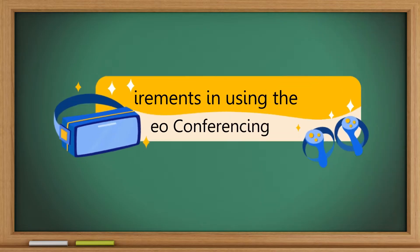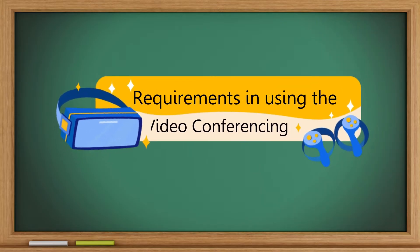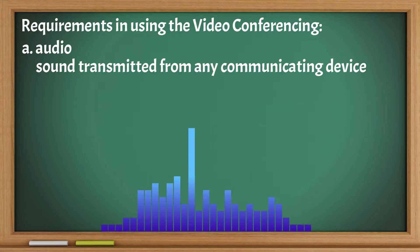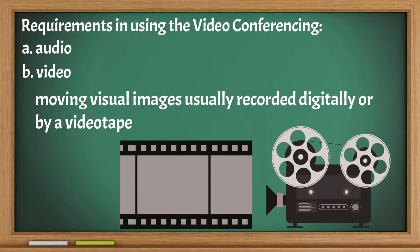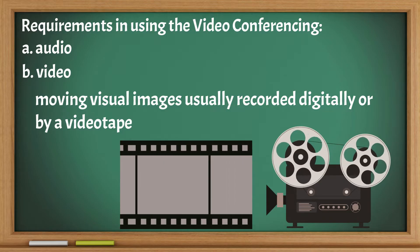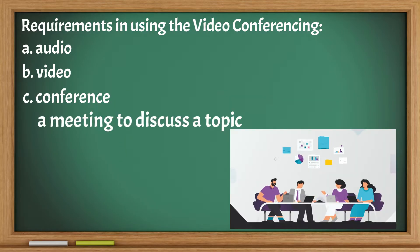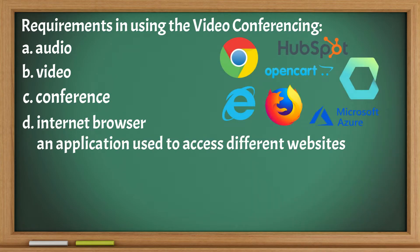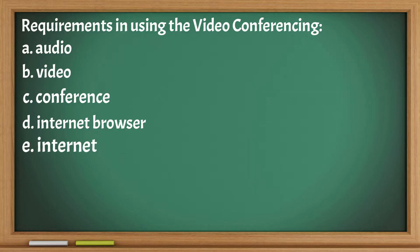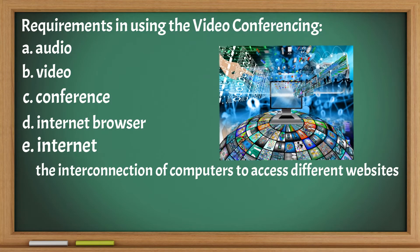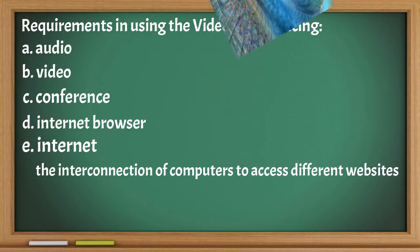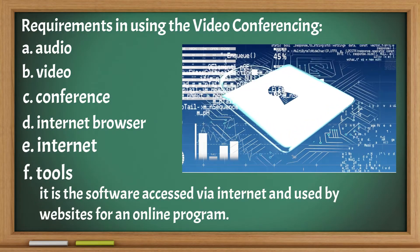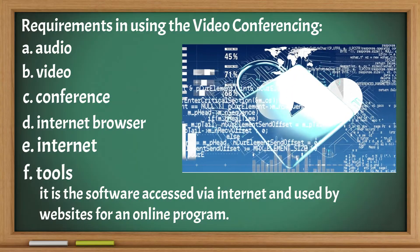The following are the requirements in using video conferencing: Audio — sound transmitted from any communicating device; Video — moving visual images usually recorded digitally or by videotape; Conference — a meeting to discuss a topic; Internet browser — an application used to access different websites; Internet — the interconnection of computers to access different websites; Tools — software accessed via the internet and used by websites for an online program.